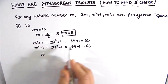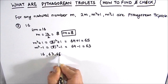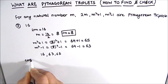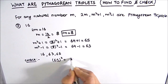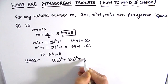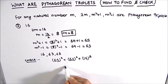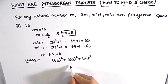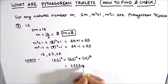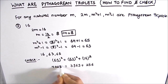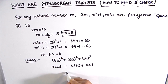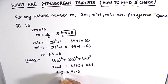Hence our Pythagorean triplets are 16, 63, and 65. Let us check: 65² should equal 63² + 16². We get 63² = 3969 and 16² = 256, and adding the two gives 4225, which equals 65². So the condition holds.